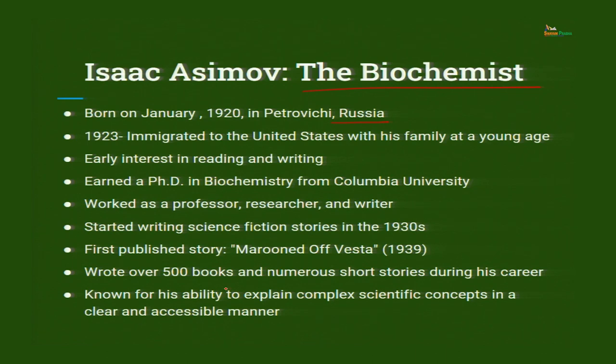Asimov started writing science fiction stories in the 1930s. His first published story was Marooned off Vesta. He was one of the most avid writers and readers — reading a lot and writing a lot. Whenever anyone asked him to explain events in his books, he gave very detailed descriptions, incorporating those explanations among the story points and providing exact scientific descriptions of events taking place in his novels.